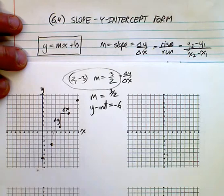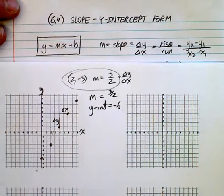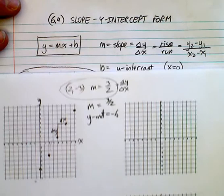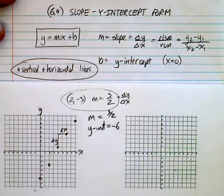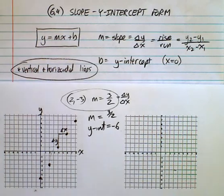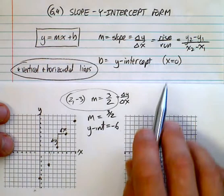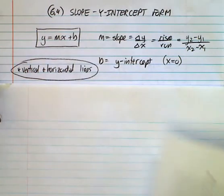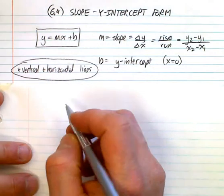We've already been looking at slopes in detail. The other value here that you haven't necessarily seen yet — excuse me — is the y-intercept. Now the y-intercept is where x equals 0, and this is where I need to run off on a little bit of a tangent. First of all, we know that vertical lines are not functions.